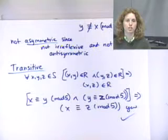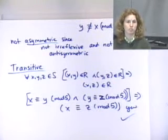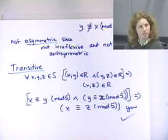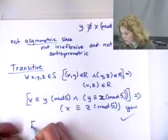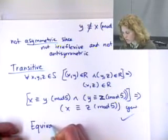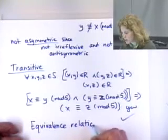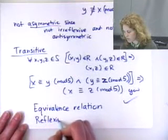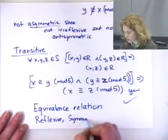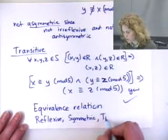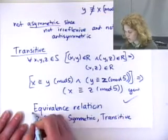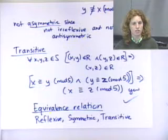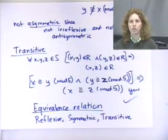This relation breaks numbers into five groups, because any number that has the same remainder is equivalent to any other number. So this is called an equivalence relation. Anything that does this same type of thing is called an equivalence relation, and the three properties they have are that they're reflexive, symmetric, and transitive.